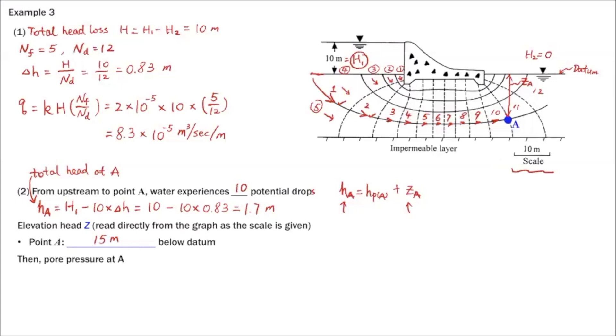And then we can calculate the pressure head at A. Or the pore pressure at A is the unit weight of water times the pressure head. And ZA here is negative 15. Because it's 15 meters below the ground surface, below your datum. So that's negative 15. If you substitute the numbers here, that's 163.8 kilonewtons per meter squared. So that's example three, seepage loss per unit length and then the pore pressure at point A.